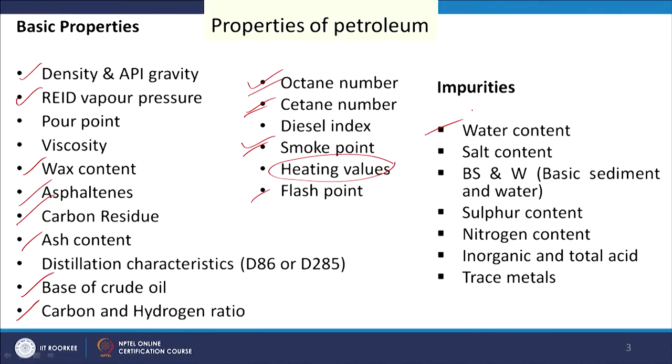Overall heating value is very, very important as we are dealing with energy from the feedstock. Different impurities are also present: water content, salt content, basic sediment and water, sulphur, nitrogen, inorganic acid, and trace metals. These are the different properties of the crude oil, and we will discuss the importance of these and how to measure them.